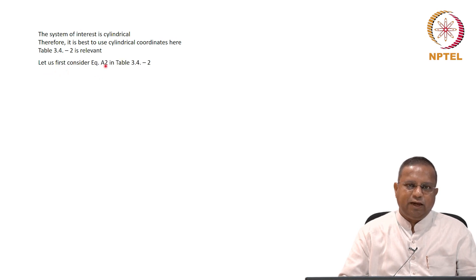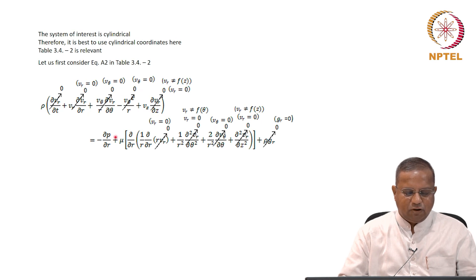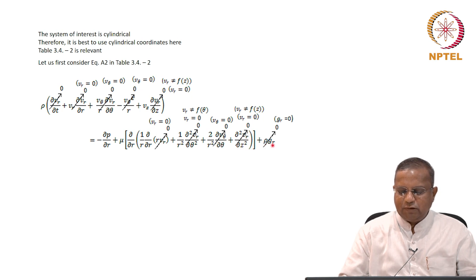We are going to look at equation A2 because this is the case of a Newtonian fluid in laminar flow, so we can directly use A2 — rho and the viscosity are constants. The equation A2 is: rho times (∂vr/∂t + vr·∂vr/∂r + vθ/r·∂vr/∂θ) equals minus ∂p/∂r + μ[∂/∂r(1/r·∂/∂r(r·vr)) + 1/r²·∂²vr/∂θ² + 2/r²·∂vθ/∂θ + ∂²vr/∂z²] + ρgr.